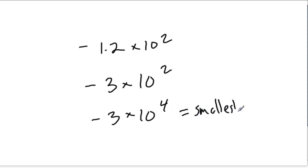Let's look at some examples. If we get negative 1.2 times 10 to the second, negative 3 times 10 to the second, and negative 3 times 10 to the fourth. Well, we compare the exponents first, and 4 is the largest. That means this number equals the smallest. And in fact, if we expand it, we get negative 3, and then 4 zeros, negative 30,000, a very negative and small number.